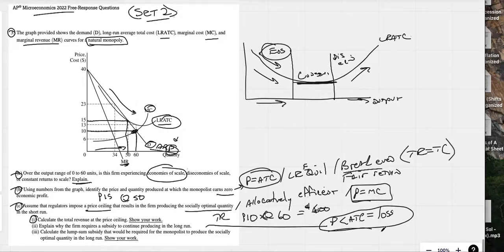This explains why they would need a subsidy to continue to produce. Because the price is less than the ATC, they're making losses. If they don't get a subsidy, they will have to go broke and leave the industry.